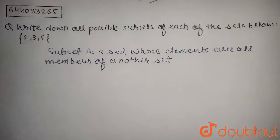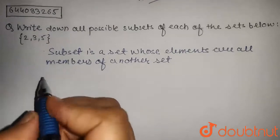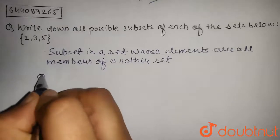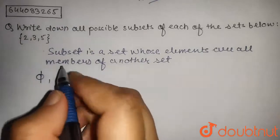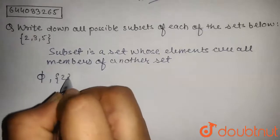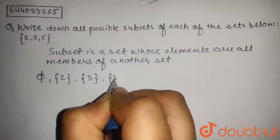So the subsets of 2, 3, 5 are: first, the empty set, as the empty set is a subset of all sets. Then individual elements, that is 2, 3, 5.